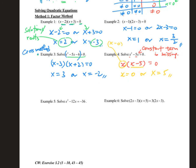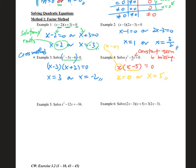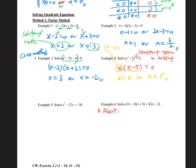Example 5 is not very hard. For example 6 there is a big alert in solving equations. The following approach is wrong: you might think that since 2x minus 3 appears on both sides, you can cancel it. After cancellation, x plus 5 equals 3, so x is minus 2 — it seems easy, but it is totally wrong. The big alert: don't cancel x in solving an equation.